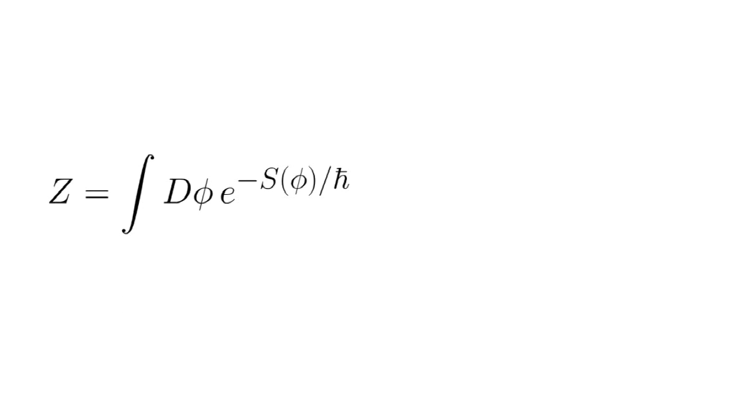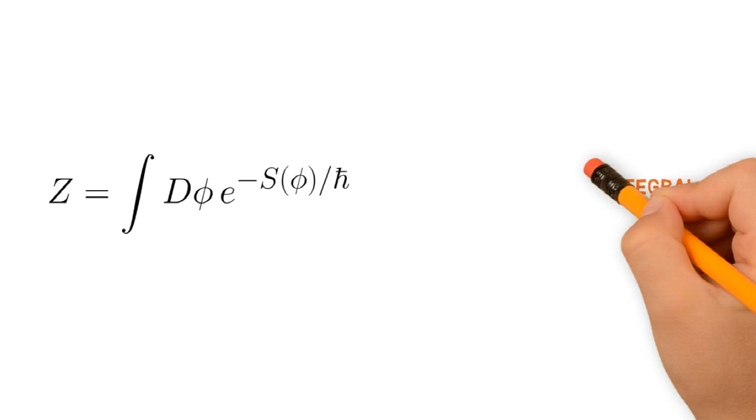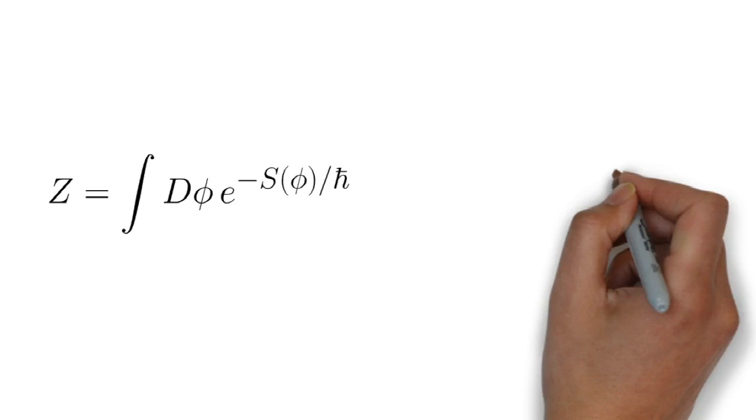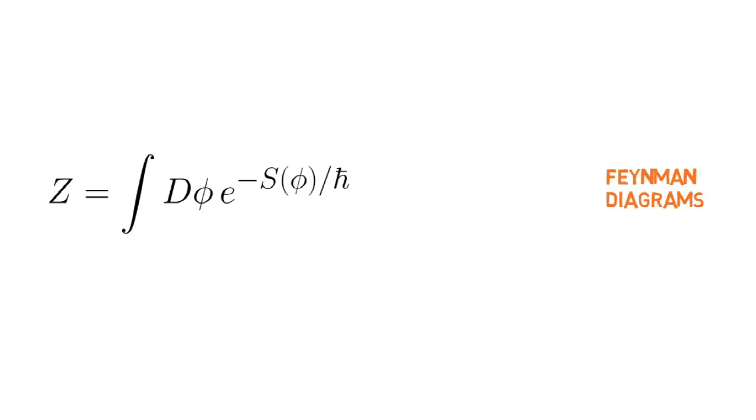Now, the seasoned quantum field theorist will recognize, either explicitly or implicitly, that formal manipulations of a path integral involve manipulations not of an integral, but of Feynman diagrams. This is because a path integral is often merely a notational device for an expansion generated by Feynman diagrams. The Feynman diagram expansion has two important features.